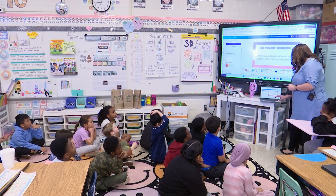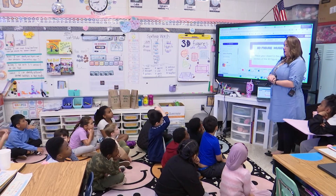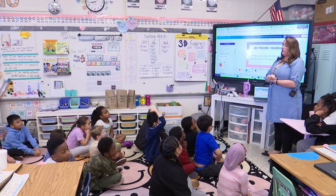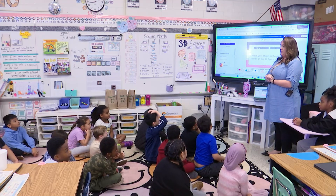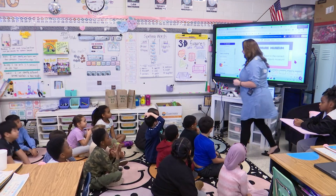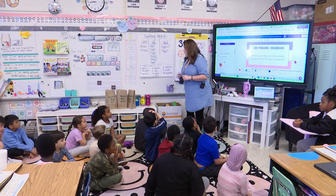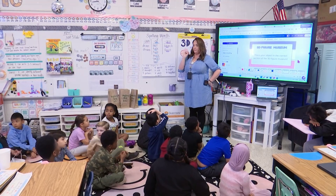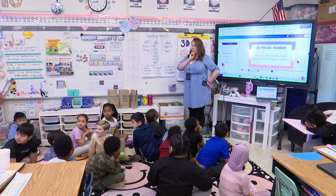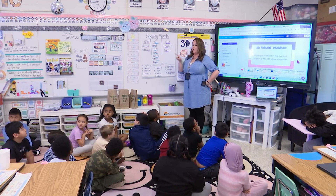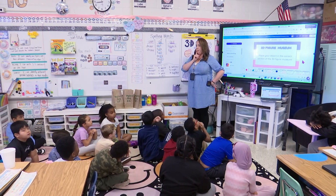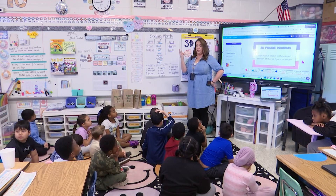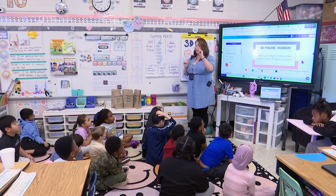Now we're going to switch gears and do a little activity where you guys move around. I have a box of real 3D figures that we see around our house, around school, everywhere. I'm going to give each of you a 3D figure, and over at the bean table is a 3D museum. You're going to place your object where you think it goes — under sphere, cube, rectangular prism, and so on.